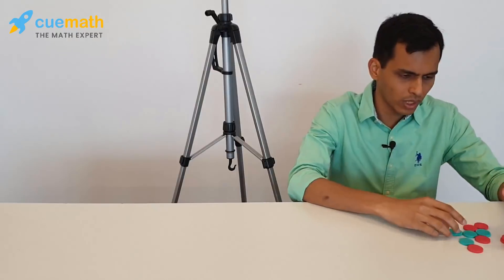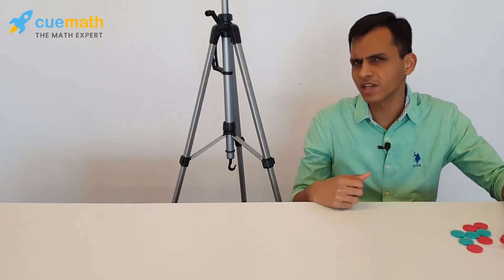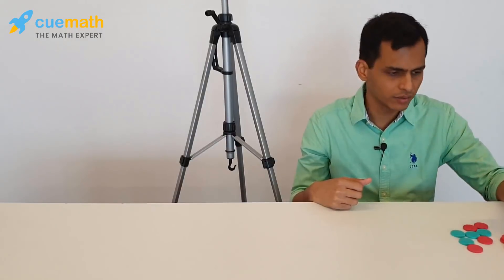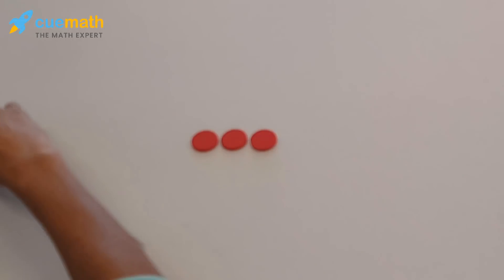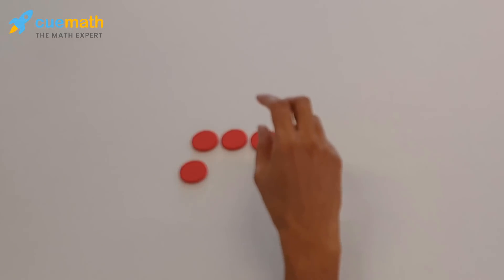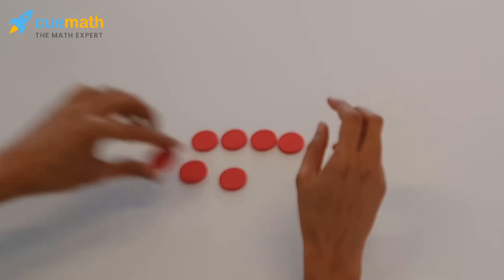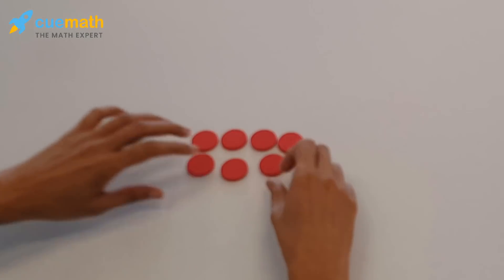Well, subtraction is thought of as taking away. So again, let's say we have to subtract 3 from 7. We take 7 color counters: one, two, three, four, five, six, seven. Subtraction is best thought of as taking away.